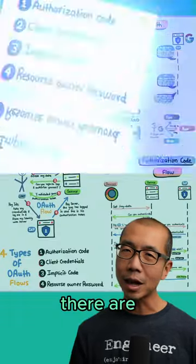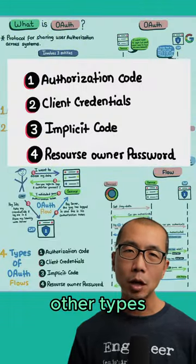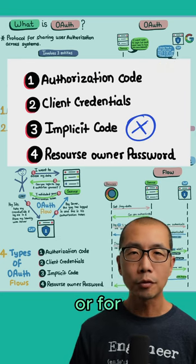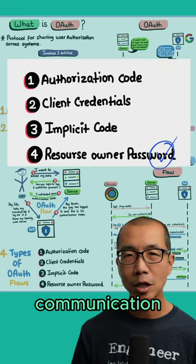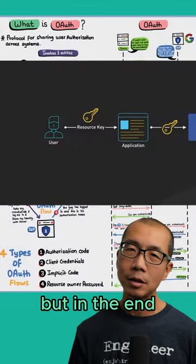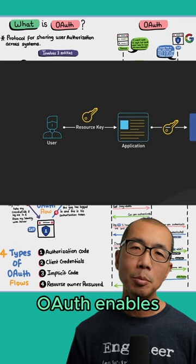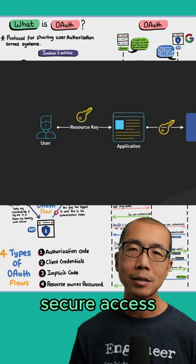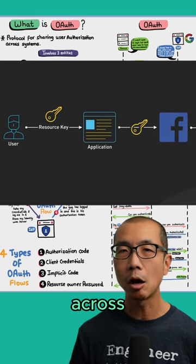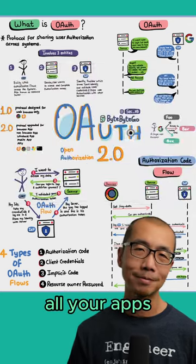There are other types of flows, like for apps that own your data or for server-to-server communication. But in the end, OAuth enables secure access without passwords across all your apps.